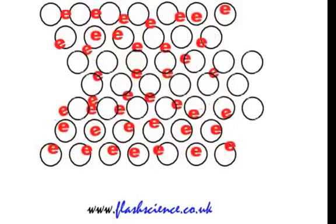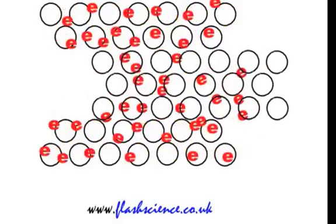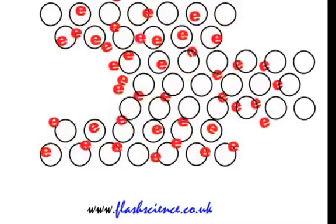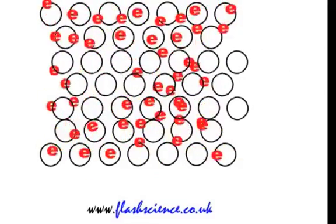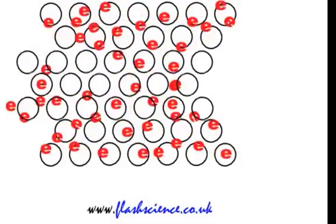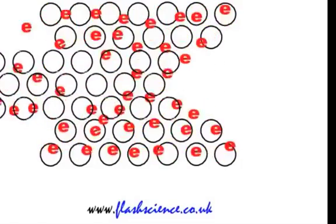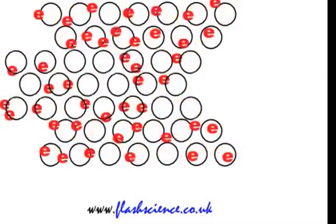Metals are also ductile or malleable. This means they can either be drawn into wires, that's the ductile, or they can be hammered or pressed into shapes. And again, this is to do with the delocalised electrons, which allow the atoms to slide over each other.